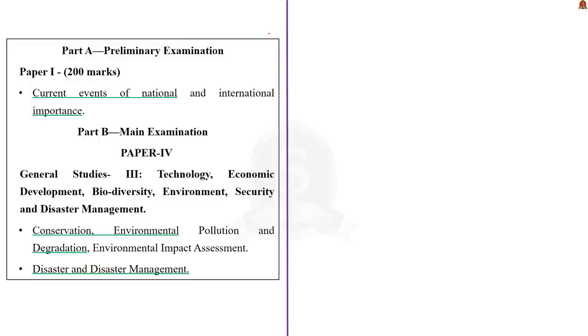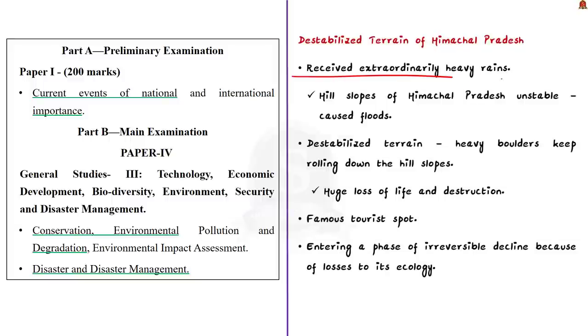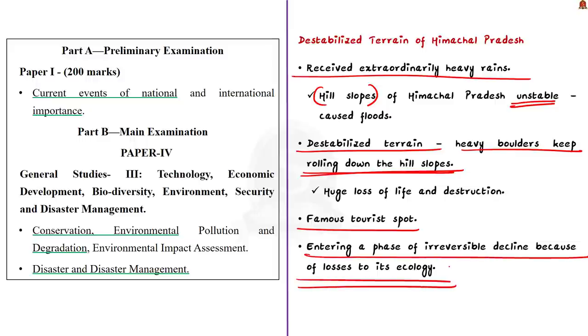Recently Himachal Pradesh received extraordinarily heavy rains and this unprecedented rainfall has made the hill slopes unstable. It has also caused floods in many areas like Dharamshala. These unstable hill slopes are a huge problem because of the destabilized terrain of Himachal Pradesh. Due to this, heavy boulders keep rolling down on the hill slopes. These huge boulders easily crush the people and infrastructure in their path while rolling down and have caused huge loss of life and destructions. We all know that Himachal Pradesh is a famous tourist spot famed for its scenic vistas and welcoming summer climate. Many lakhs of people visit Himachal every year and this is a great cause of worry because states like Himachal Pradesh are entering a phase of irreversible decline because of losses to their ecology.